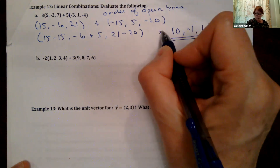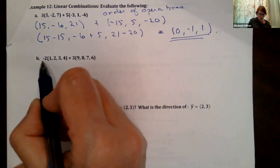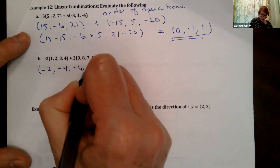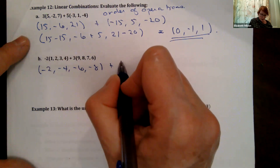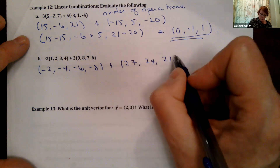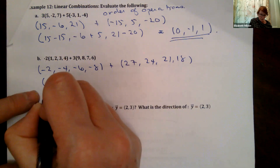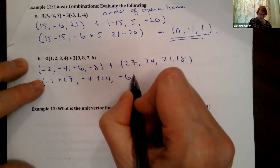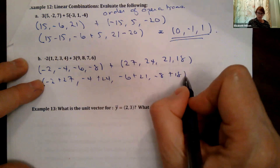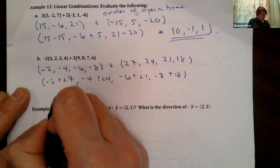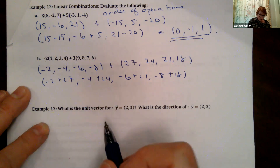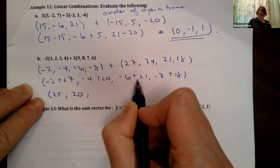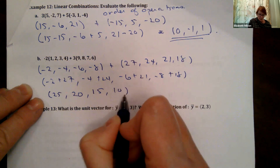Just watch your order of operations — if you add first and then multiply, it's going to be wrong. Another example: negative 2 times the vector 1, 2, 3, 4 plus 3 times the vector 9, 8, 7, 6. Multiply first to get minus 2, minus 4, minus 6, minus 8, plus 27, 24, 21, 18. Combining component by component gives 25, 20, 15, 10.